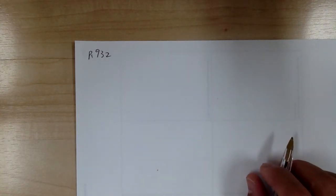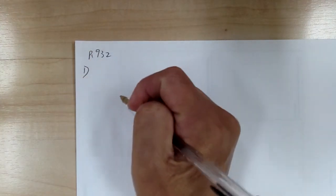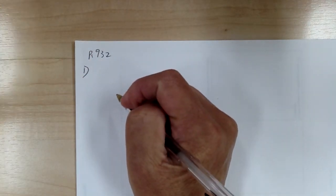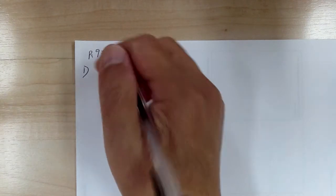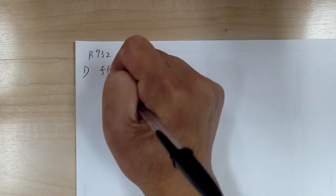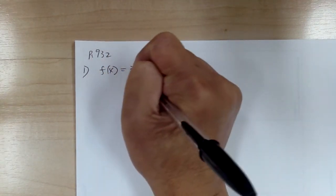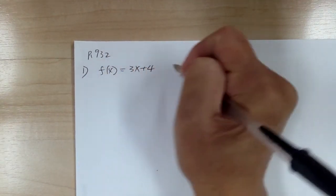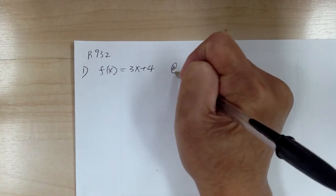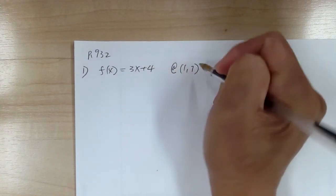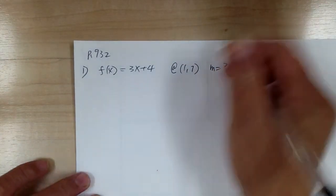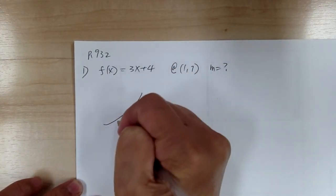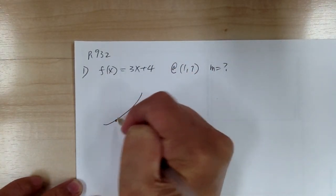Let's go to page 932 and start with number 1. It says I want to solve for the tangent line. You have f of x equal to 3x plus 4, and it's tangent at point 1, 7. You're looking for the slope, so you can sketch out something to help you visualize.